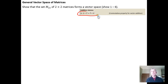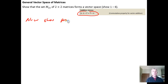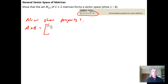Now we show property 3: matrix addition is commutative. A+B looks like [A₁₁+B₁₁, A₁₂+B₁₂; A₂₁+B₂₁, A₂₂+B₂₂] — we just computed A+B on the previous slide, so the components are A row 2 column 1 plus B row 2 column 1, and A₂₂+B₂₂.